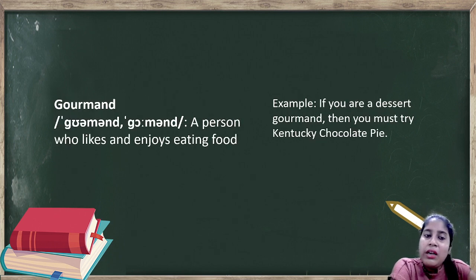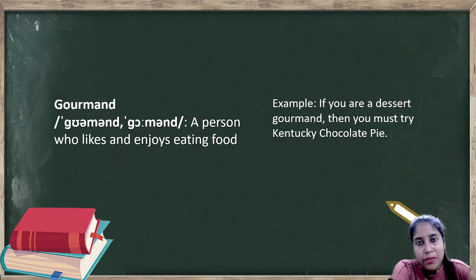Gourmand. Gourmand means a person who likes and enjoys eating food. Someone who likes food very much is called gourmand. Example: If you are a dessert gourmand, then you must try Kainchi's chocolate pie. Simple thing is gourmand is nothing but a noun. So if you want to call someone a foodie, instead of saying voracious, you can say gourmand if he or she generally likes eating food or something.